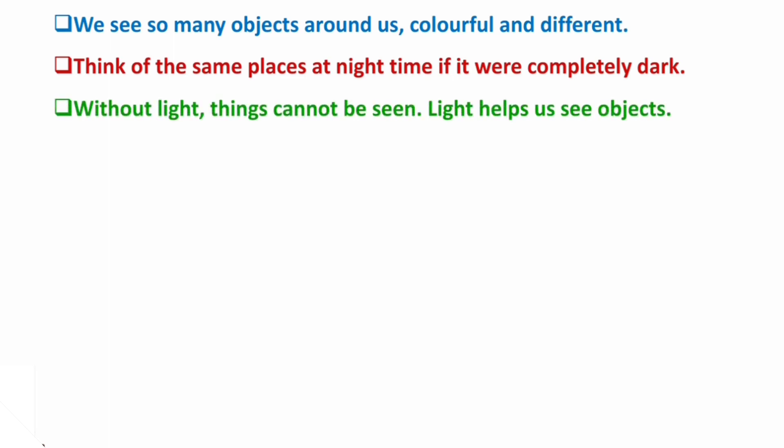Why is it so? Without light, things cannot be seen. Light helps us to see objects. If there is no light, then we cannot see any object. There must be a source of light — either a natural source or an artificial source like a tube light, lamp, etc.